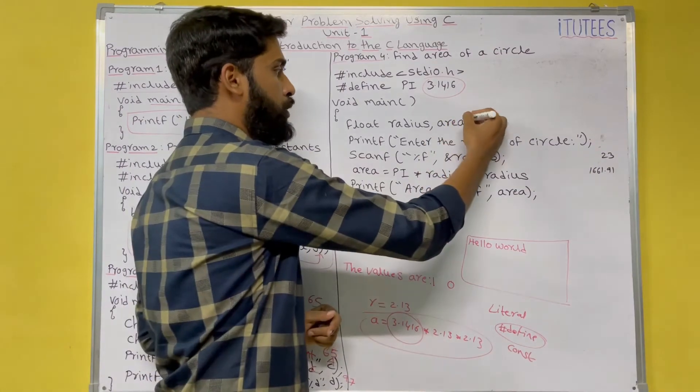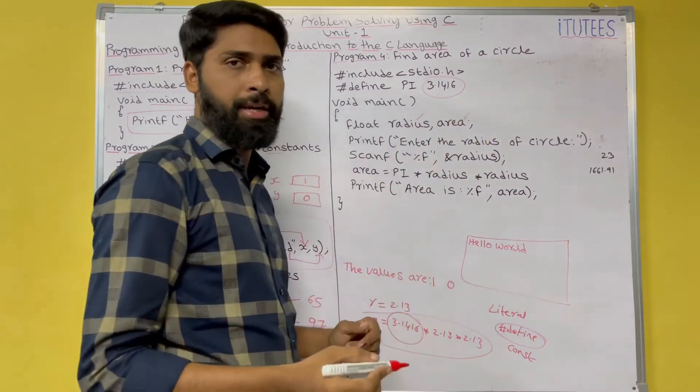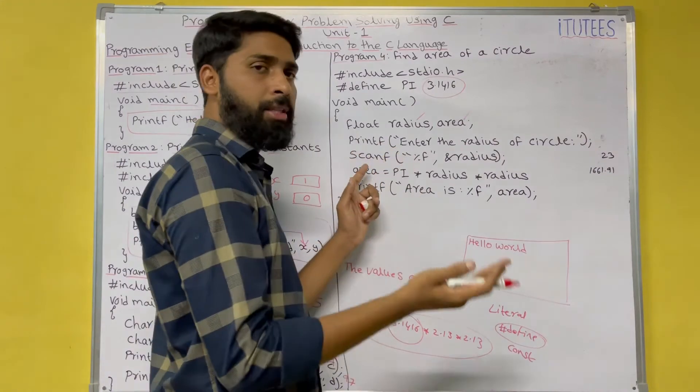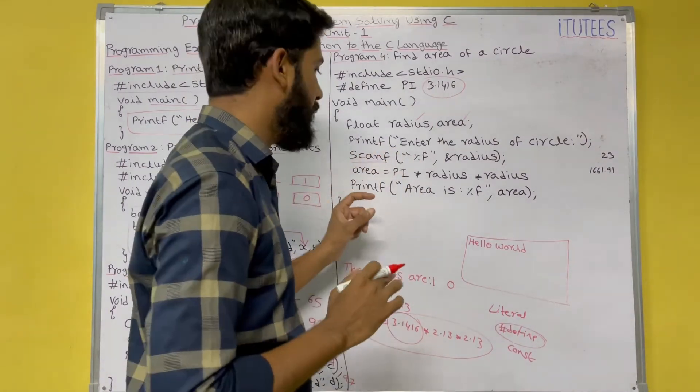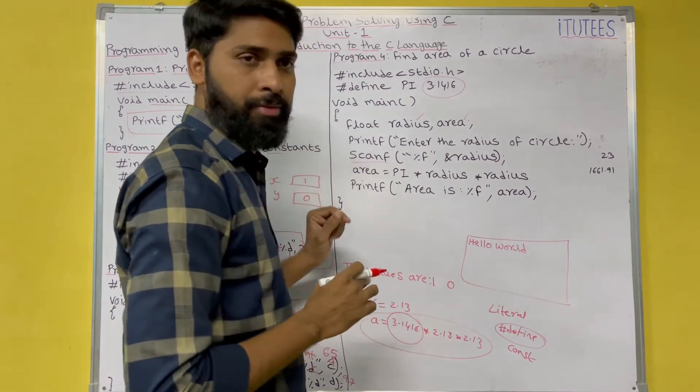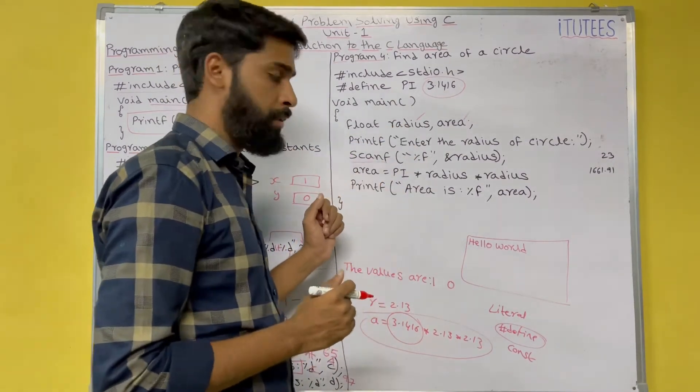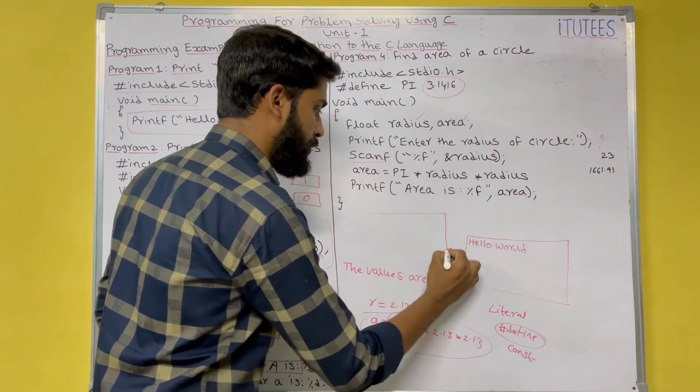I take two variables. One is the area. Another one is radius. I want to read the value from the keyboard. I use scanf. Now, you understand one thing. Printf scanf. Why I write these two instructions here? If you execute this program.